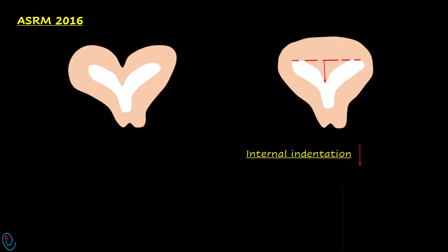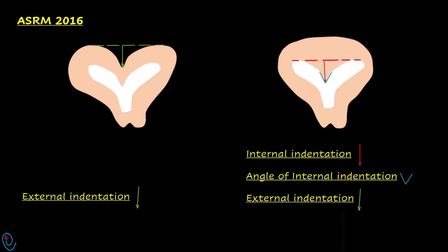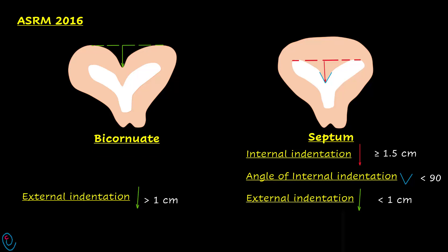In the ASRM criteria, we draw the inter-ostial line and measure the internal indentation — the distance from the inter-ostial line to the fundal indentation. We also measure the angle of internal indentation and the external indentation if present. The diagnosis is uterine septum if internal indentation is 1.5 cm or more, angle of internal indentation is less than 90 degrees, and external indentation is less than 1 cm. The diagnosis is bicornuate uterus if external indentation is more than 1 cm.